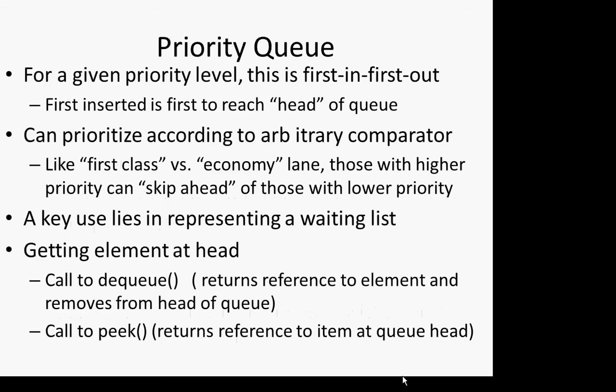A priority queue is a genuinely useful structure we'll see in one of the examples. For instance, a set of people awaiting diagnostic testing, treatment, contact tracing, or housing units — people wait in a queue and are processed in some order. Beyond simple arrival order, there's a notion of priority: children might be given higher priority for TB contact tracing than non-children because they're at higher risk.